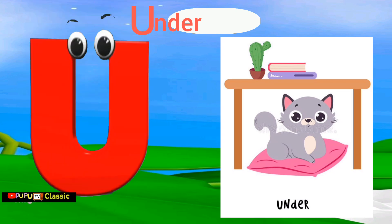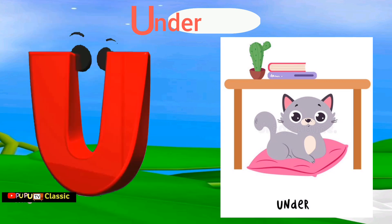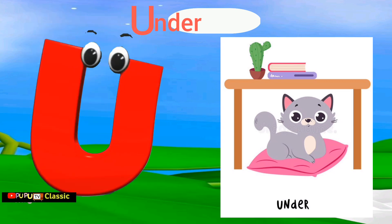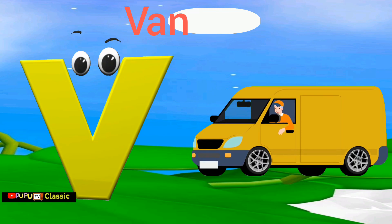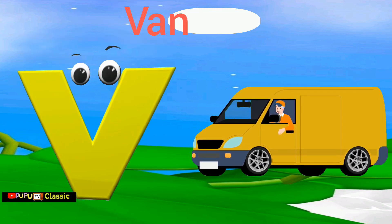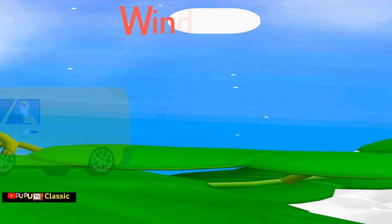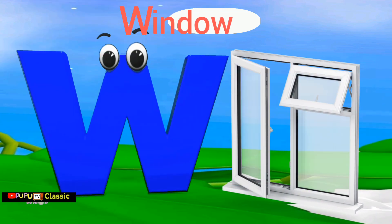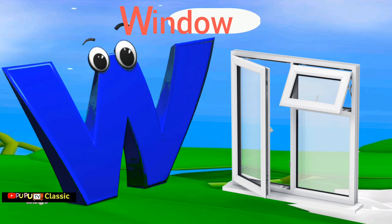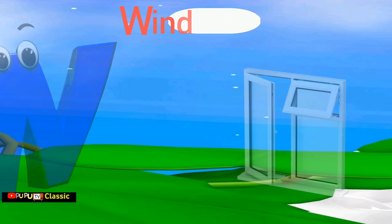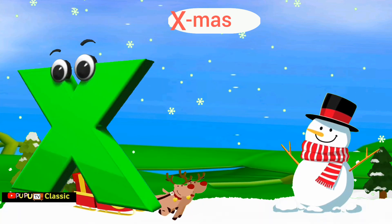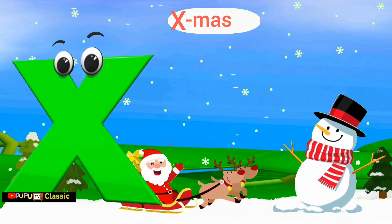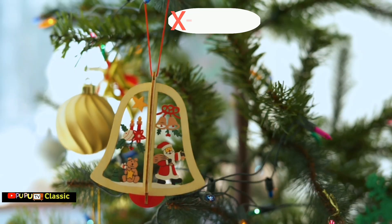U is for under, u-u-under. V is for van, v-v-van. W is for window, w-w-window. X is for x-mas, x-x-x-mas.